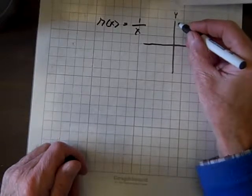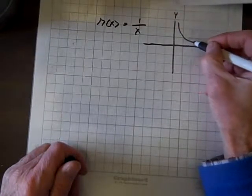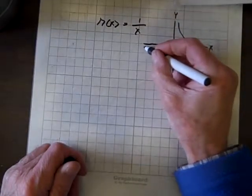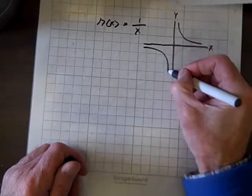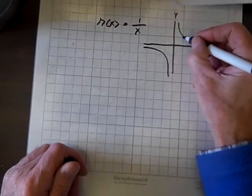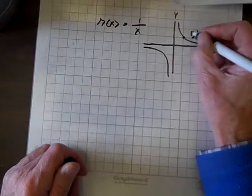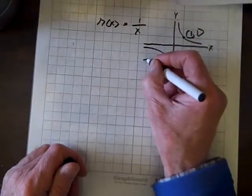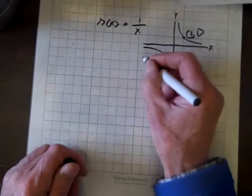The graph looks like this. A couple of points on that graph: one is (1, 1), another point is (-1, -1).